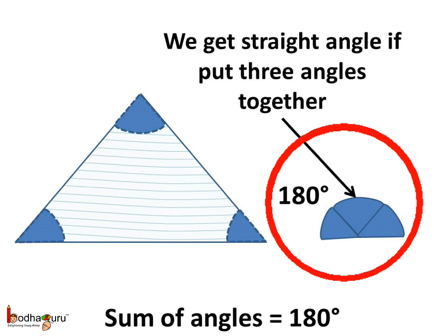See, this is the shape we have obtained. This angle is a straight angle. That is, it is equal to 180 degrees. And you know, this is true for all the triangles.